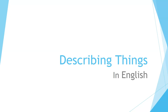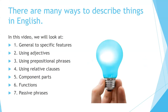Describing things in English. There are many ways to describe things in English. In this video, we will look at: general to specific features, using adjectives, using prepositional phrases, using relative clauses, component parts, functions, and passive phrases.